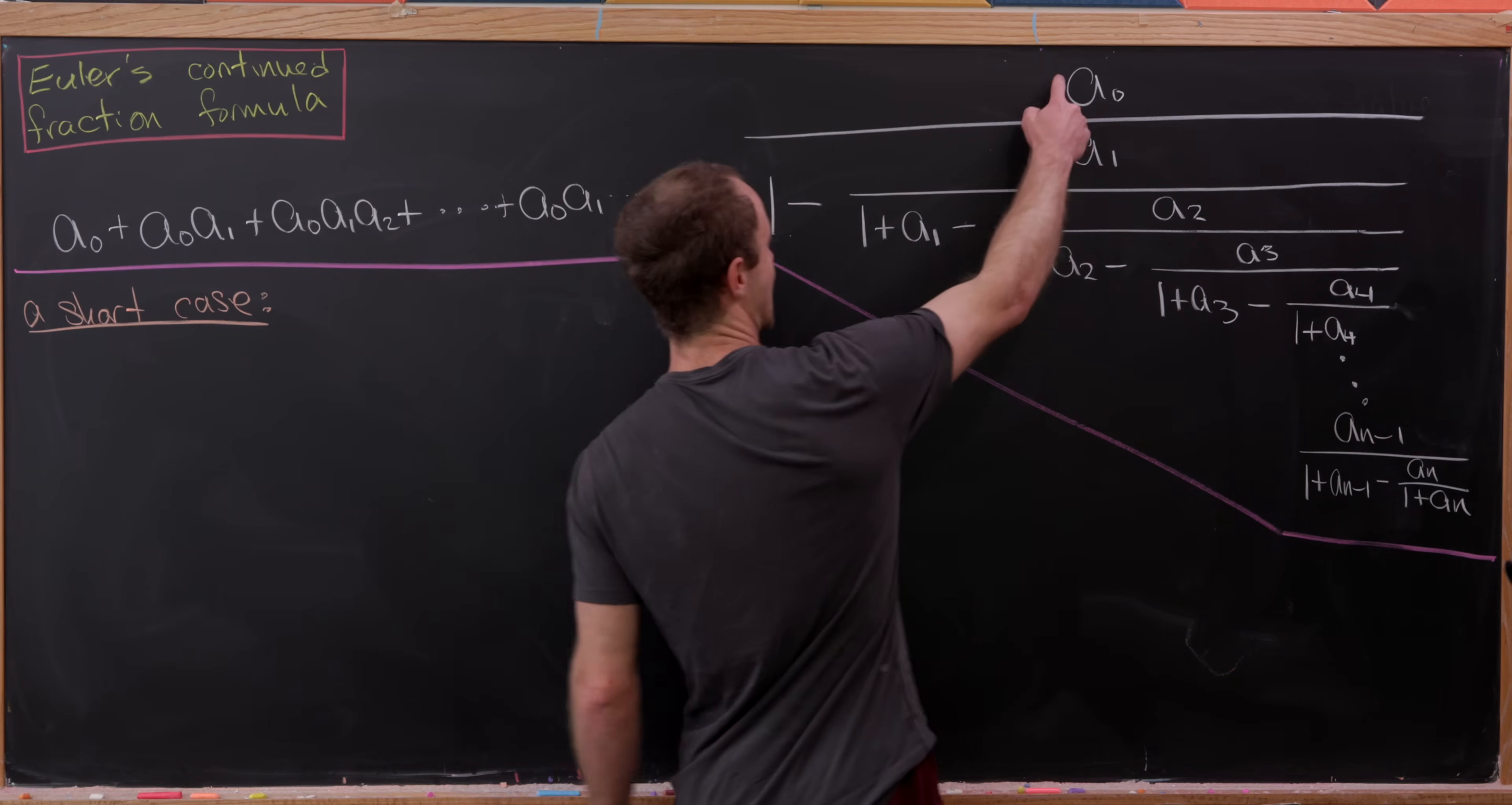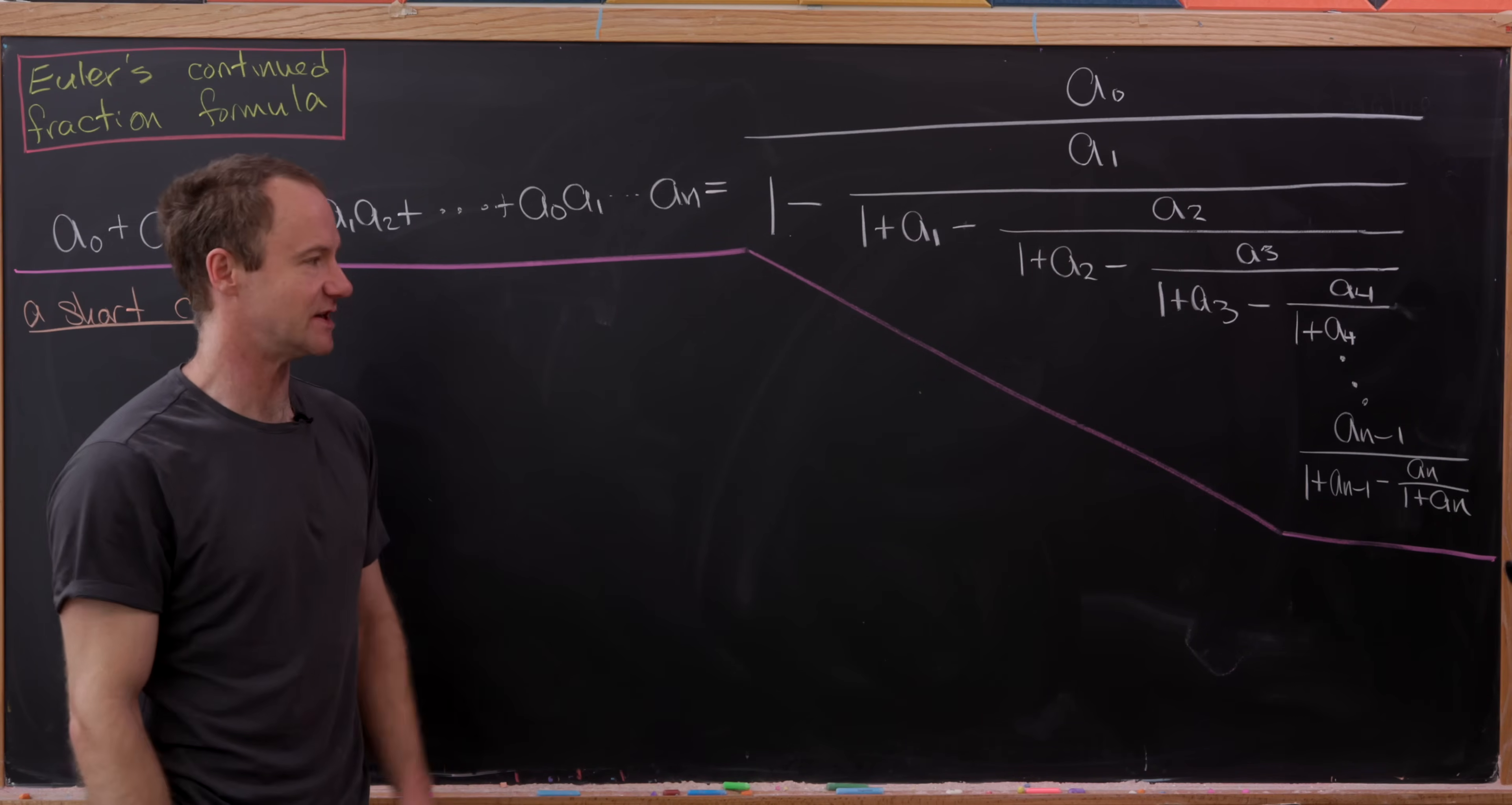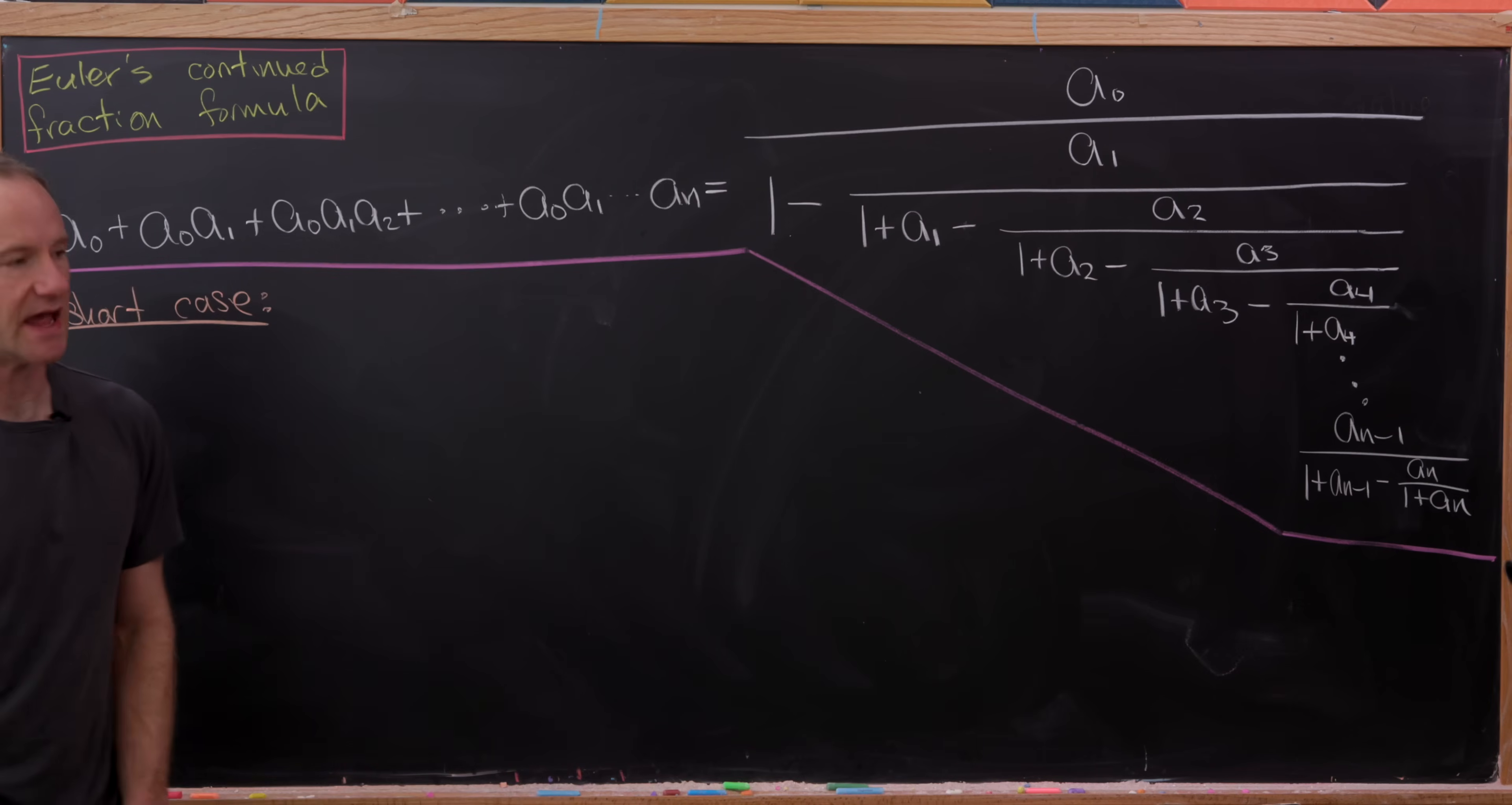So here we've got a0 over 1 minus a1 over 1 plus a1 minus a2 over, and then you can see the pattern continuing. And it'll end down here at this step where we have an minus 1 over 1 plus an minus 1 minus an over 1 plus an.